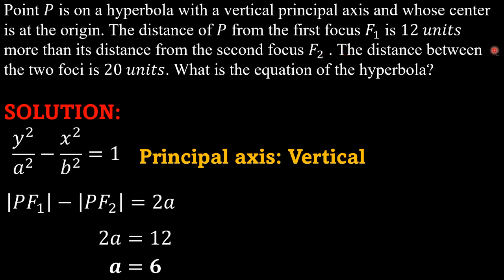Sabi naman dito, the distance between the two foci is 20 units. So that is 2c is equal to 20. Divide both sides by 2, that is c is equal to 10.